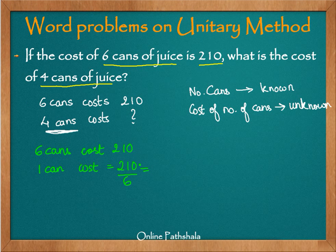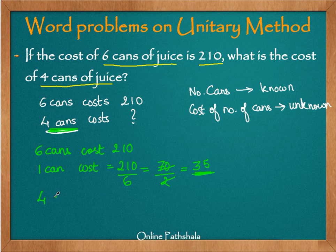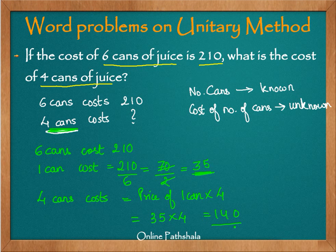Therefore, one can will cost 210 divided by 6. Dividing by 3 first: 3 times 70 is 210, and 3 times 2 is 6. Then dividing further: 2 times 35 gives 70, so the cost of one can is 35. Therefore, the cost of four cans is 35 multiplied by 4, which gives us 140. Four cans of juice cost 140.